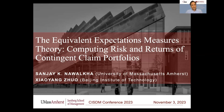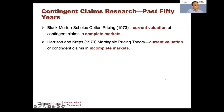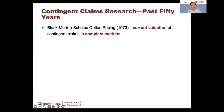My basic question before I begin: I'm going to go over the history of contingent claims research over the past 50 years, which began with the revolution created by Black-Merton-Scholes in 1973. I'll highlight what's happened in the last 50 years, some of the most important papers, then get into what has not been done, and then motivate some of the research I'm doing.